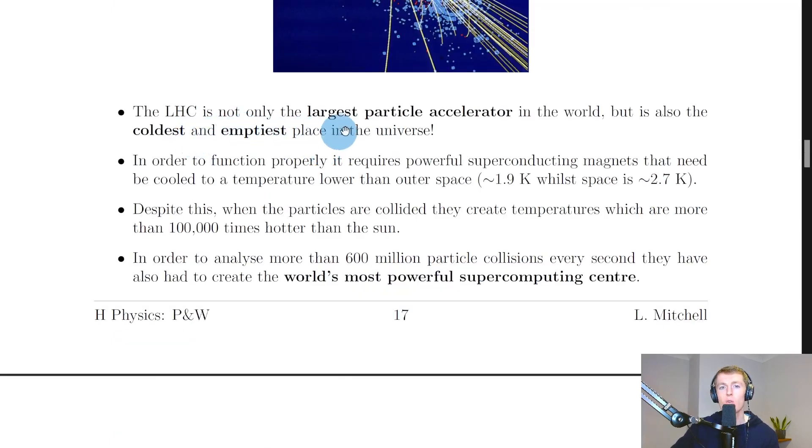The LHC is not only the largest particle accelerator in the world, but is also the coldest and emptiest place in the universe. In order to function properly, it requires powerful superconducting magnets that need to be cooled to a temperature lower than outer space, about 1.9 Kelvin, while space is about 2.7 Kelvin. And that's the average temperature of space. So there are parts which are much hotter, but on average it's pretty cold. But the Large Hadron Collider is even colder by just under 1 Kelvin, which is equivalent to a temperature of about 1 degree Celsius lower.